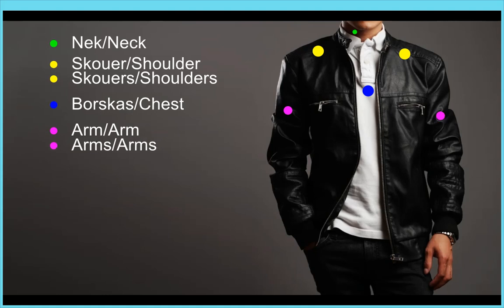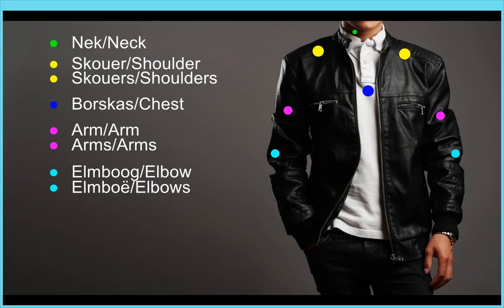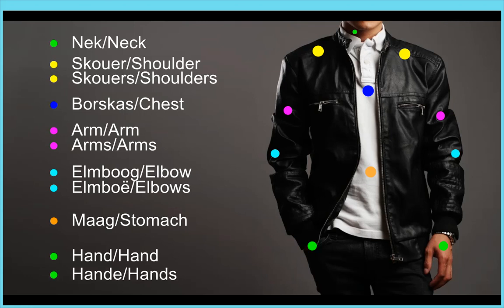Okay, so you can't see the elbow clearly here, but elbow in Afrikaans is elmboog. Arms, elbow, elbows. Maag - stomach. Hand, hand - hand. Hande, hande - hands.